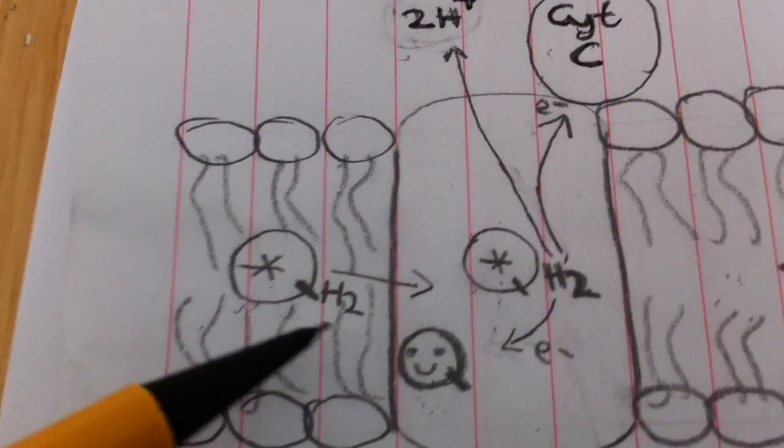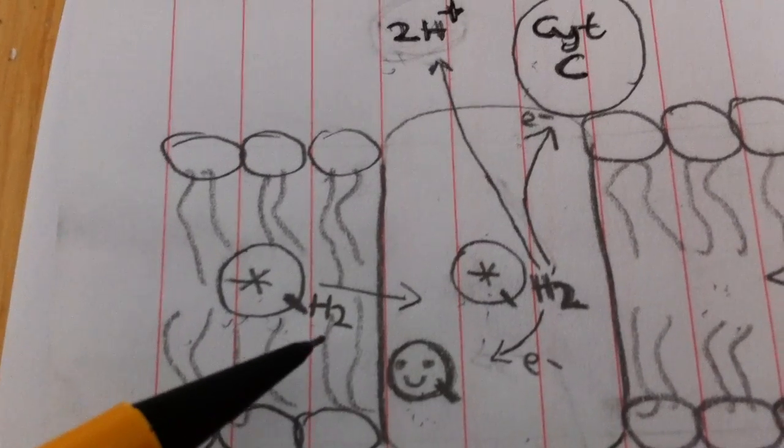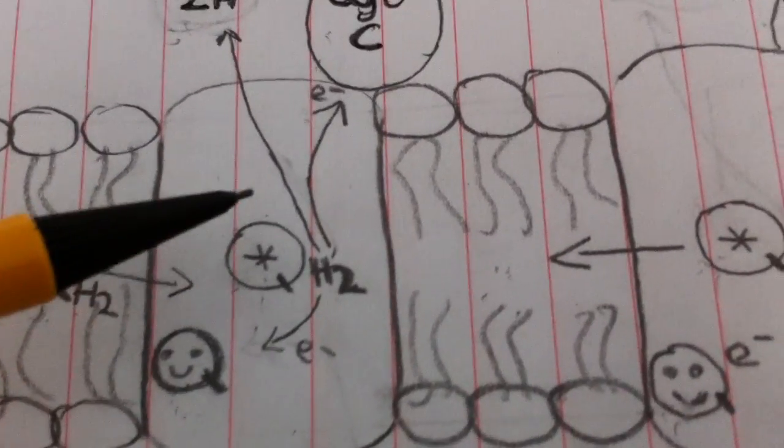Right, this is fully reduced. It's got its electrons from NADH or FADH2 from complex 1 or complex 2. It diffuses through the membrane and comes to complex 3.